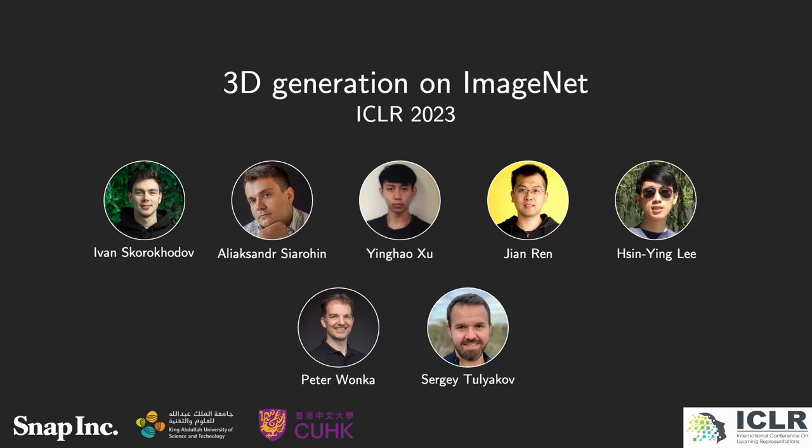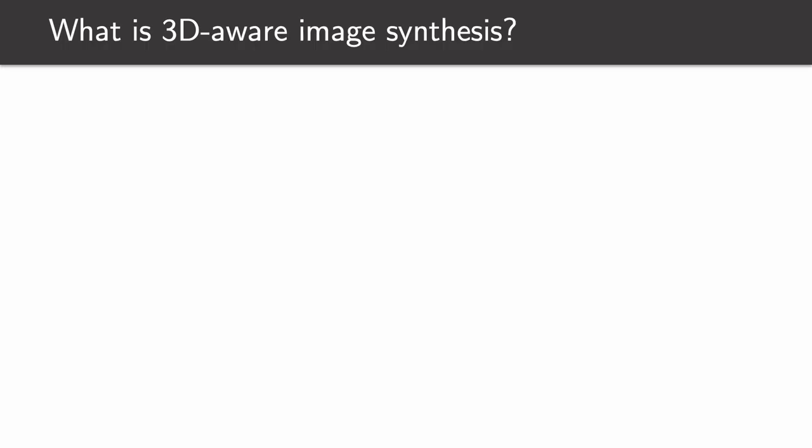Hi, my name is Ivan Skrochodov, and in this video I would like to present '3D Generation on ImageNet', our recent work on 3D synthesis, which we did together with Aleksandr Seirohin, Inhaoxu, Jianren, Shin-Yin Li, Peter Wonka, and Sergei Tulikov.